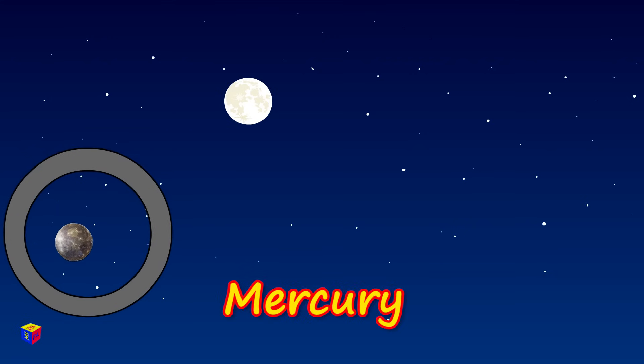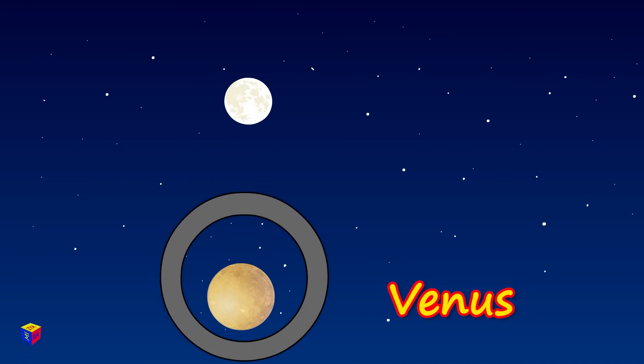Mercury, the closest planet to the sun. And this is Venus. It is called the morning star, but in fact, it is a planet.